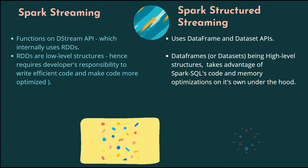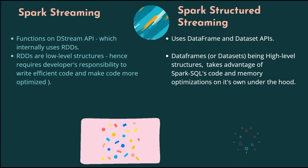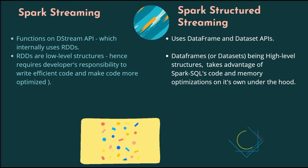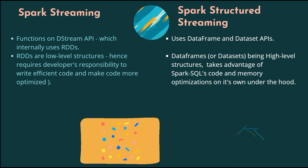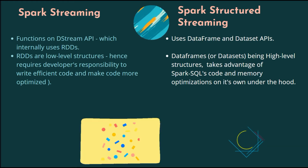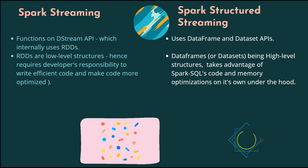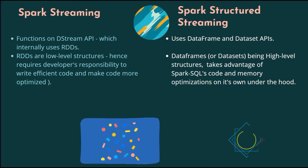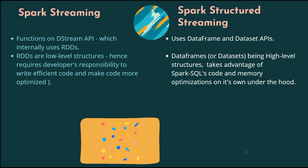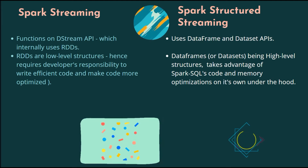Spark Streaming functions on the DStream API which internally uses RDDs. RDDs are low-level structures and hence require developers' responsibility to write efficient and optimized code. Structured Streaming uses DataFrame and Dataset APIs. DataFrames and Datasets, being high-level structures, take advantage of Spark SQL's code and memory optimizations on their own under the hood.